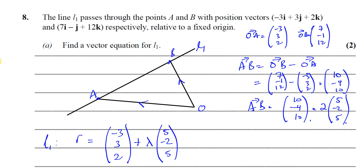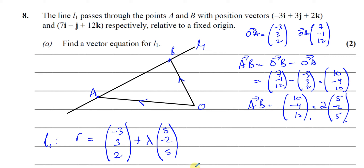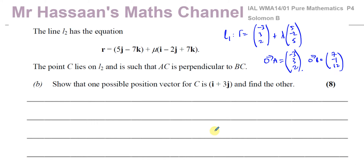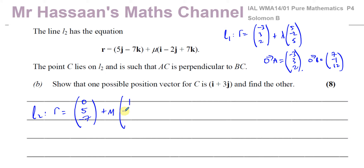Now I'm going to go on to part B — it's quite a long question. Part B tells us line L2 has equation R equals 0, 5, minus 7, plus mu times 1, minus 2, 7. The point C lies on line L2 such that AC is perpendicular to BC. We need to show that one possible position vector for C is I plus 3J, and find the other.